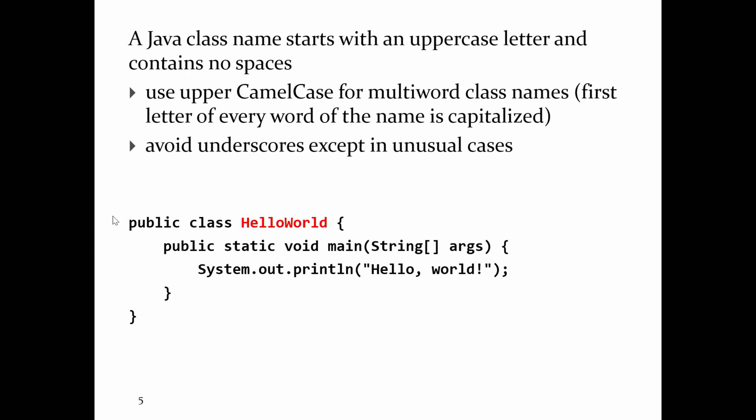Here I've got "public class HelloWorld". A class in Java, for now, is just the way that you have to make a program. Later on, you'll learn that a class corresponds to what's called a user-defined type. For now, take it for granted that it has to be public. You need the word "class" and then you give your class a name. The naming convention in Java is that a class name always starts with a capital letter, and if it's made up of multiple words, each word is also capitalized — big H Hello, big W World. That's the convention Java programmers use for naming classes.